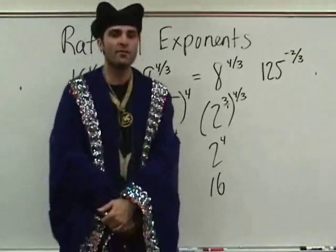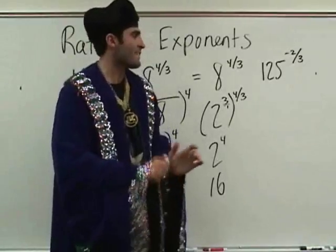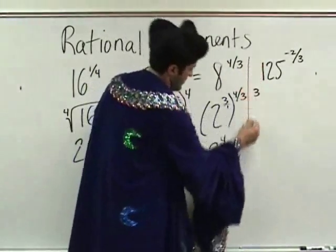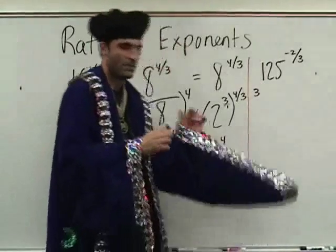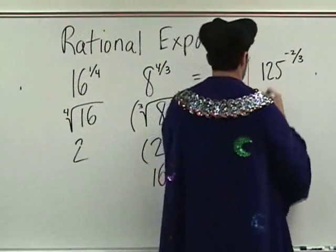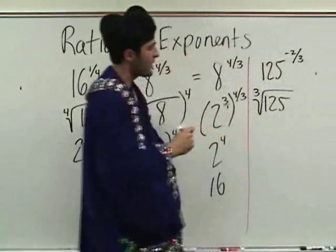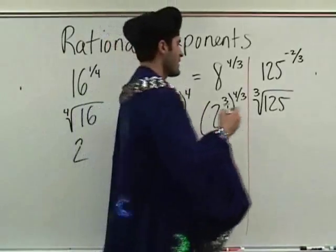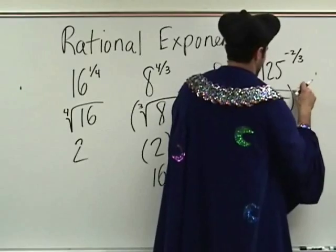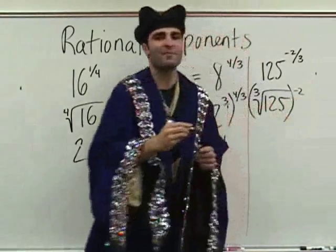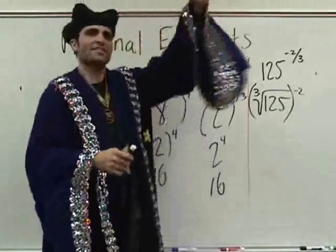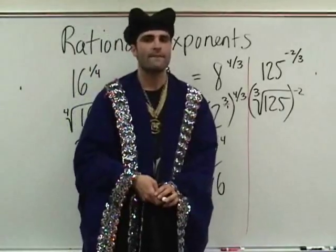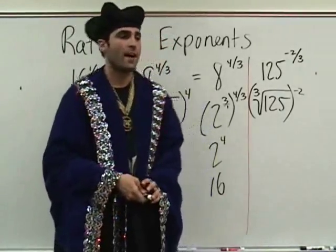All right. So where does the three go? On the outside of the radical. Can there be a negative power? The three is on the outside. Where does the negative two remain? Outside. What is the cube root of one twenty-five? Five. Five times five is twenty-five, twenty-five times five is one twenty-five, so that's five. Five to the negative two.